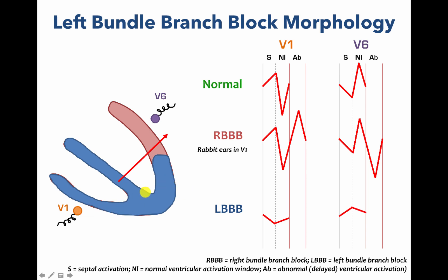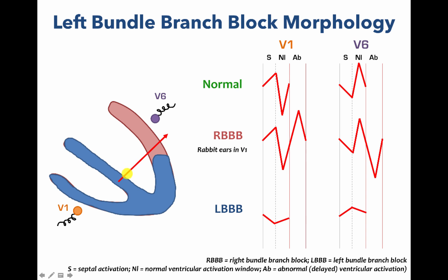Then, once the right ventricle is fully depolarized, the left ventricle is depolarizing slowly as the wave front proceeds through gap junctions. There is a net electrical axis now towards V6 and away from V1, taking a long time due to slow conduction. So in V1 you get a negative deflection, and in V6 you get a positive deflection. When the entire ventricle is depolarized, you return to baseline. So that's normal EKG, right bundle branch block, and left bundle branch block.